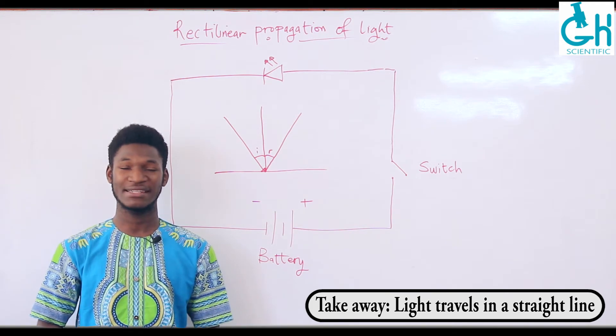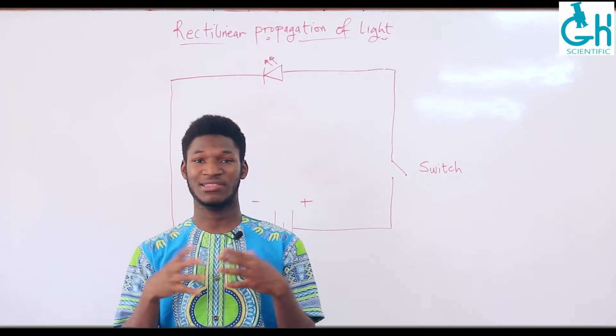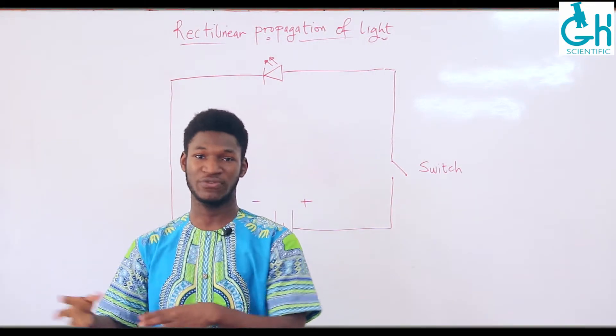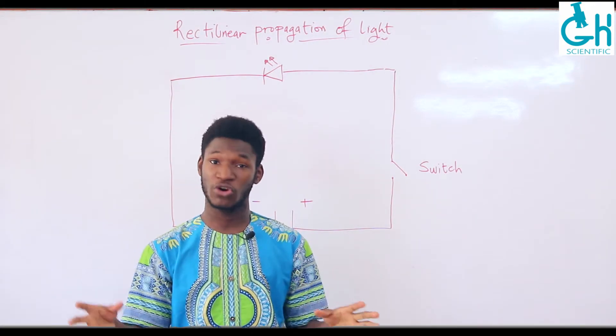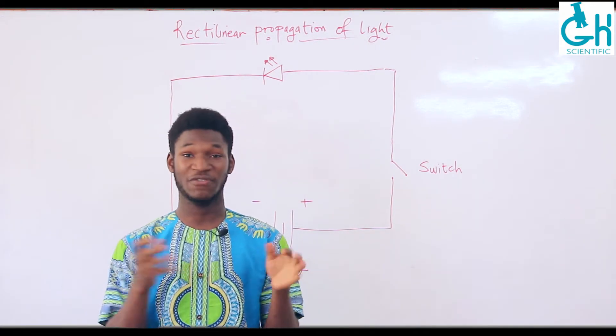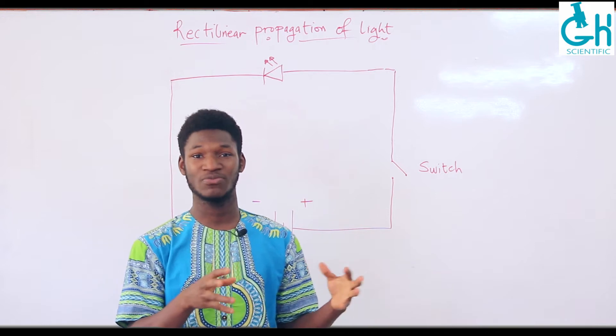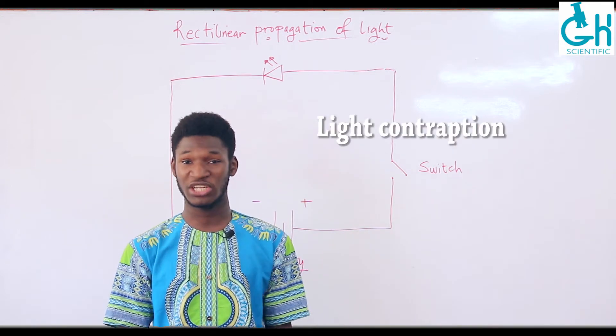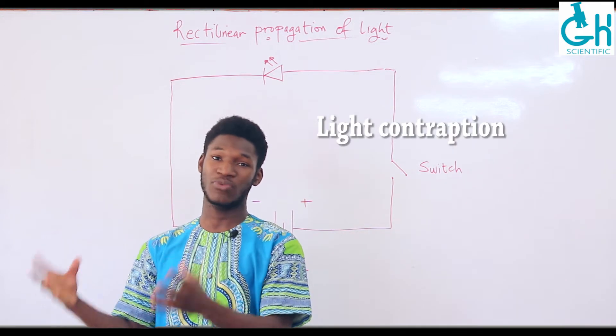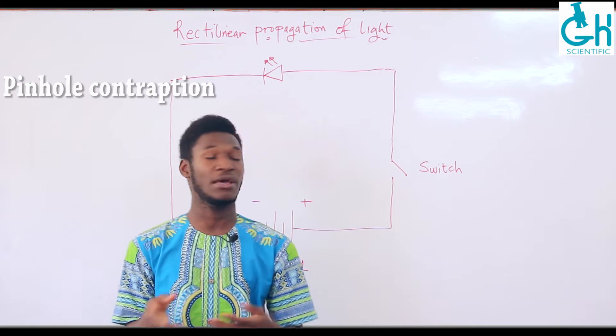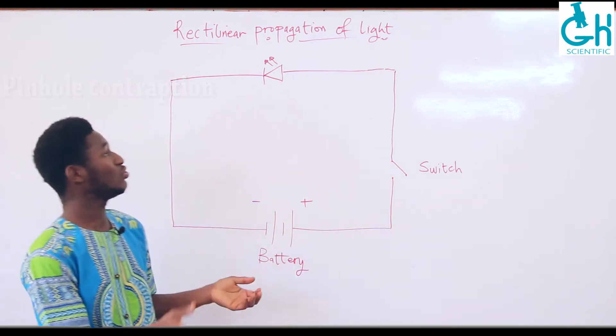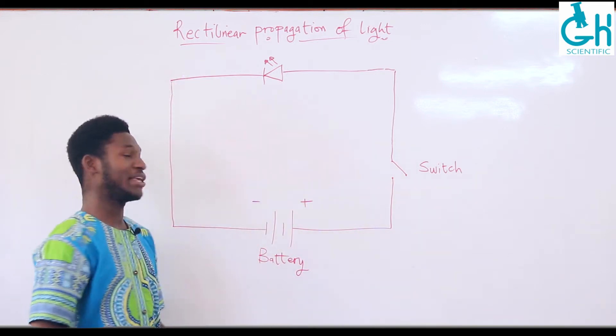So the principle that light travels in a straight line underlies so many things, and that is what we'll explore today. We begin with two different categories of components: the first is our light contraption, and the second is our pinhole contraption.